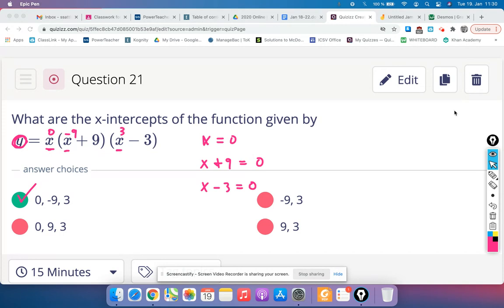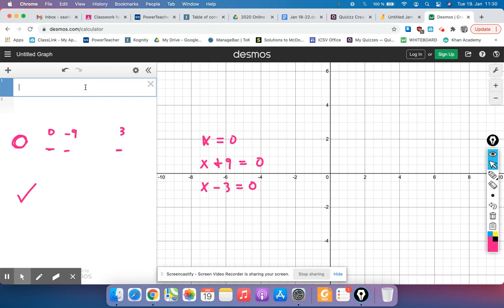If you've got a graphing calculator, you could type this equation in. So y equals x times x plus 9 times x minus 3.